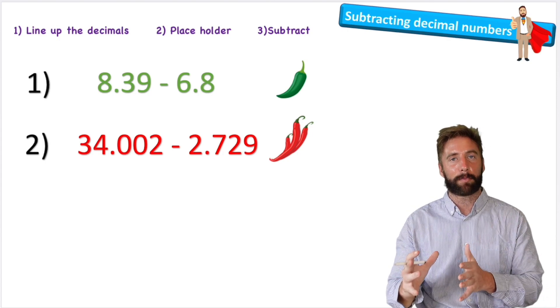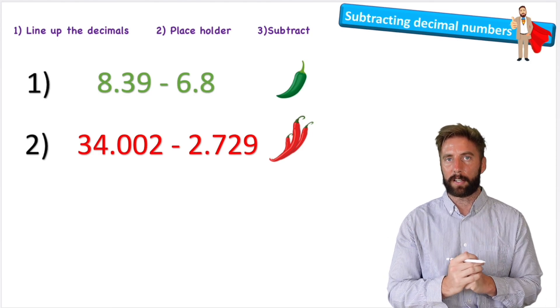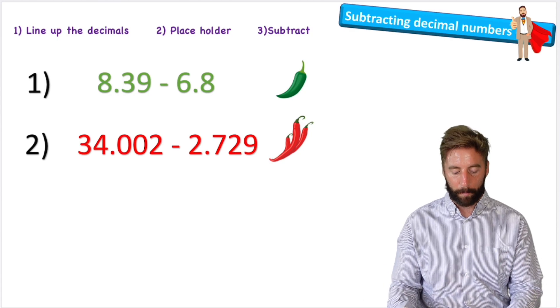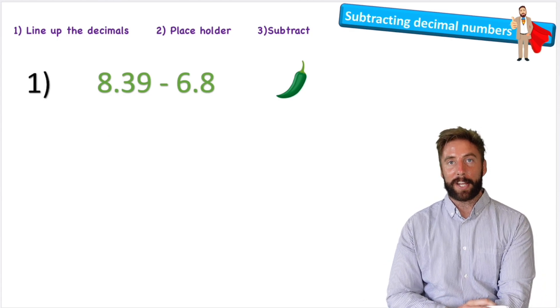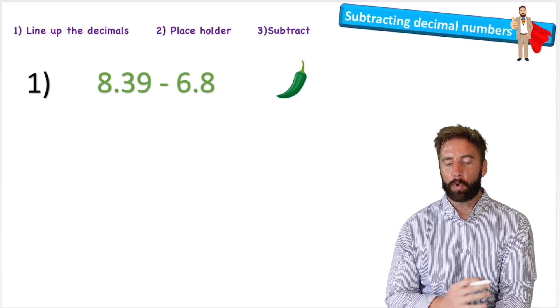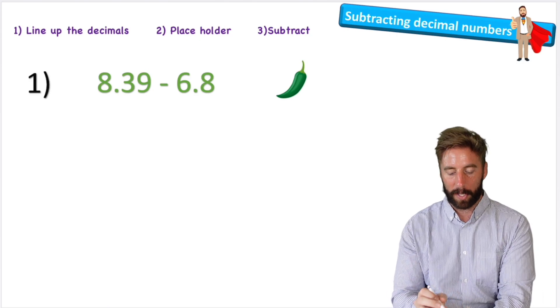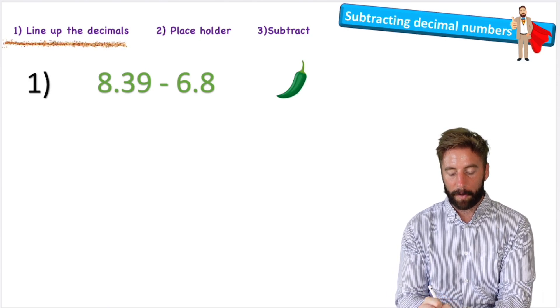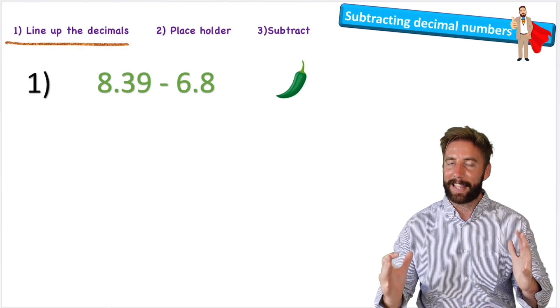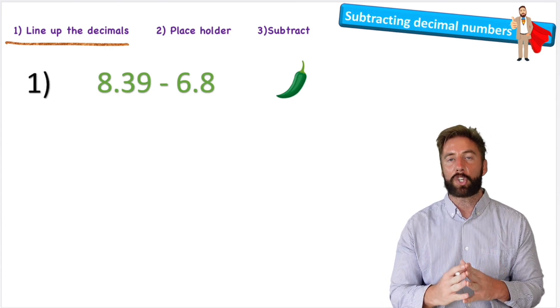We just need to learn a couple of extra new things. So let's jump into question one. Question one says 8.39 subtract 6.8, and I'm going to use my steps at the top here to help me do this. Step one says line up the decimals, and really this is the major new thing that we're going to learn today. We need to make sure that we are lining up our decimals so that we get everything into the correct place so that we don't make any small mistakes subtracting the wrong digits.